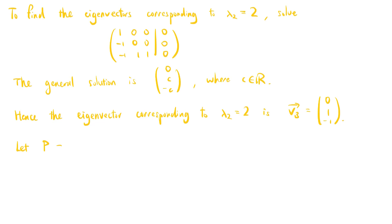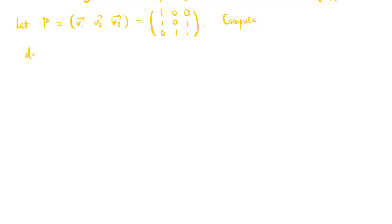To find the eigenvectors corresponding to λ2 equals 2, we solve the corresponding system. The matrix P formed by the eigenvectors is [1, 0, 0; 1, 0, 1; 0, 1, negative 1]. We compute the determinant of P by expanding along the first row to get 1 times the determinant of [0, 1; 1, negative 1], which equals negative 1, which is nonzero. So P is invertible, which means that A is diagonalizable.